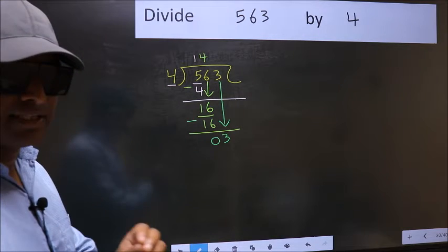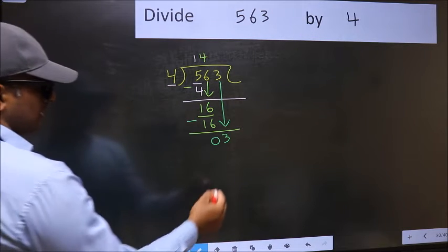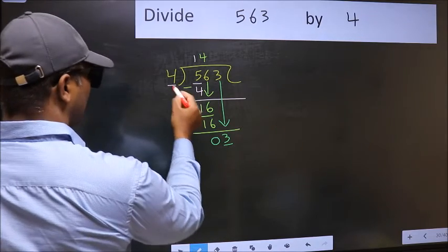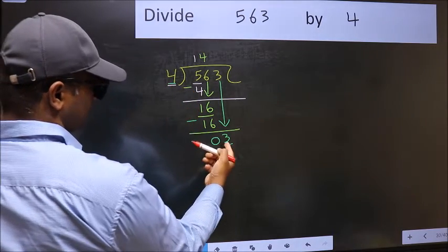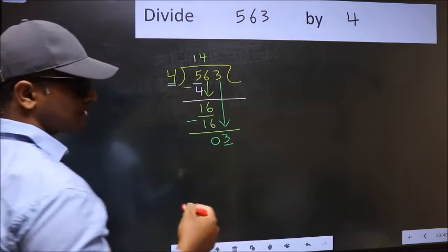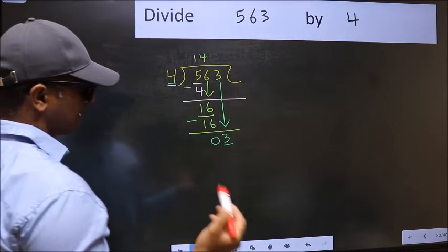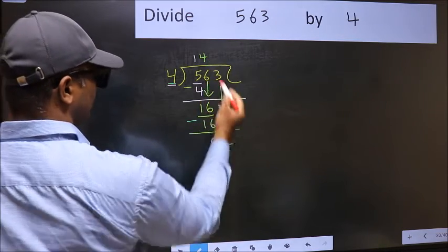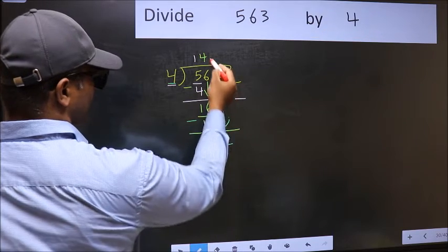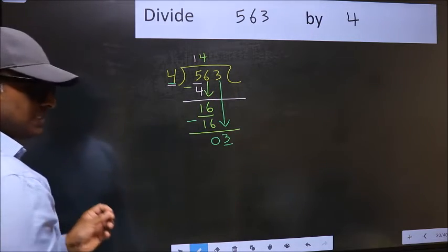And the mistake is this. Here we have 3 and here 4. 3 is smaller than 4. So what many do is they directly put a dot and take 0, which is wrong.